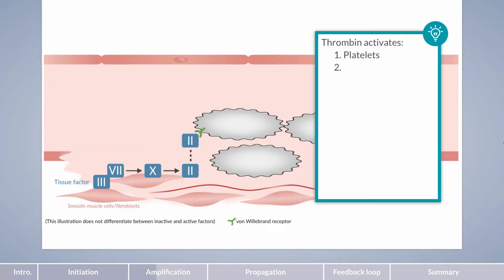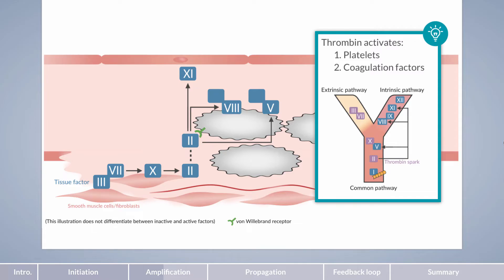The second important task of thrombin is the activation of other clotting factors. Thrombin initially activates factors 11, 8, and 5, therefore establishing a link to the intrinsic pathway.